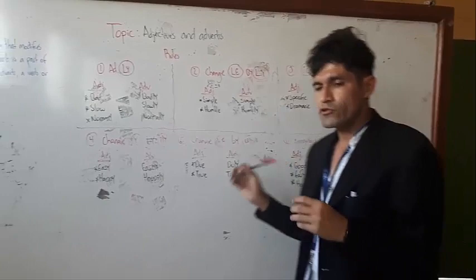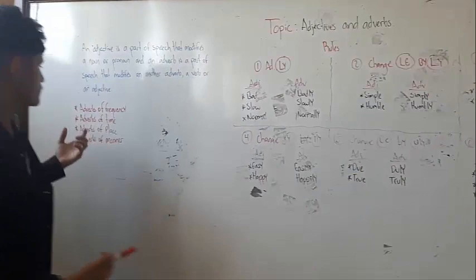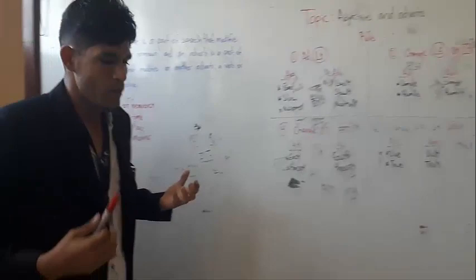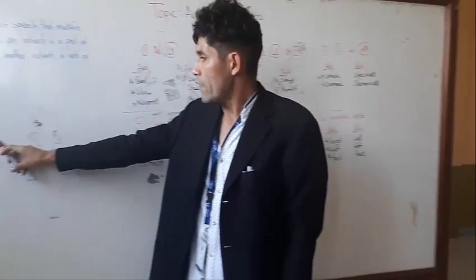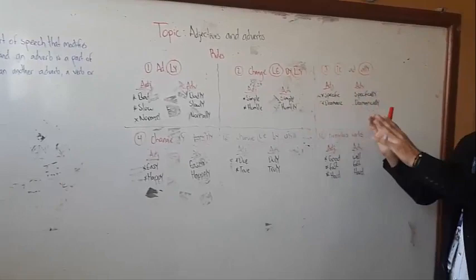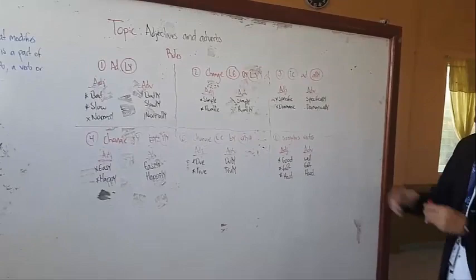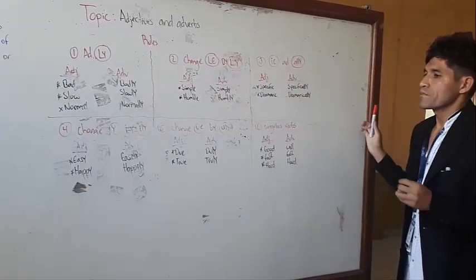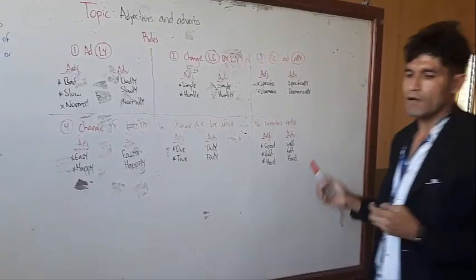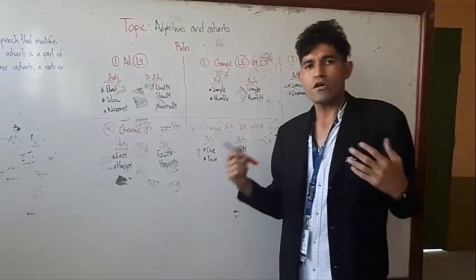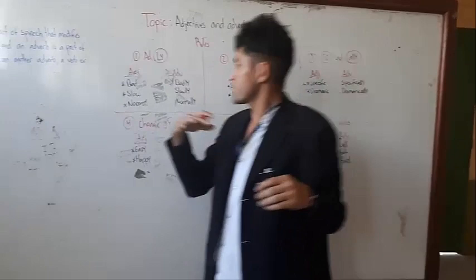We have six rules in adverbs of manner. I am not trying to say that we have just these kinds of rules, because in adverbs of time, adverbs of place, and adverbs of frequency, we have other rules. But now we are learning about adverbs of manner. For example, bad becomes badly, slow becomes slowly, normal becomes normally, and so on. We need to pay attention to every rule. Now we are going to make some examples in order to clarify these rules.